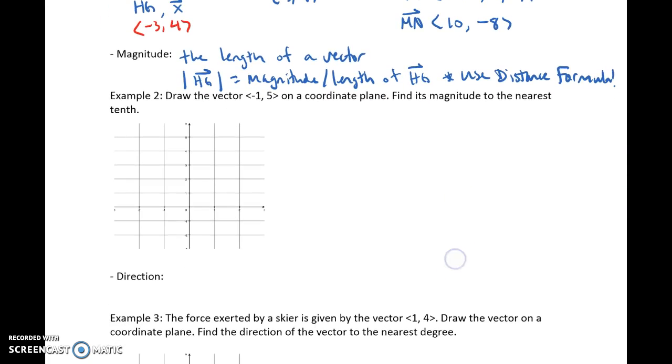So example 2, we're going to draw this vector, and you can pick your initial point to be anywhere. I always like to pick my initial point to be 0, 0, because it's nice and easy. So you can choose your own initial point, and this just means we're going to go left 1, up 5. So go left 1, up 1, 2, 3, 4, 5. So this is my vector.